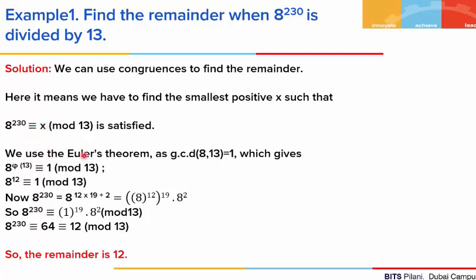In this case, we can use Euler's theorem since GCD of 8 and 13 is 1. Euler's theorem states that 8 to the power φ(13) will always be congruent to 1 mod 13. We know that φ(13) is 12, since 13 is a prime number — φ(p) equals p minus 1, so it is 12. Using this, we write 8 to the power 230, noting that 12 times 19 gives 228, plus 2, so the power 230 is split accordingly.